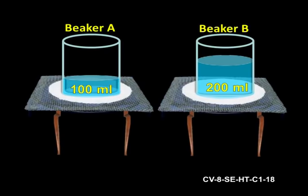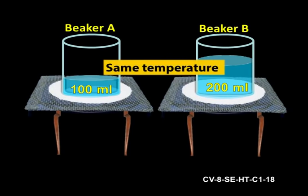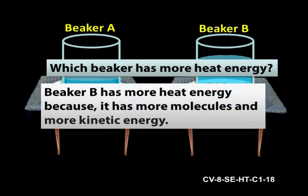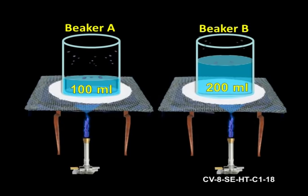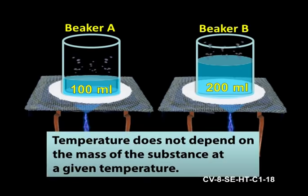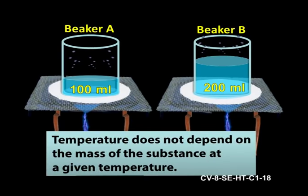Children, let us do an activity. Take 100 ml water in beaker A and 200 ml water in beaker B both at the same temperature. Which beaker has more heat energy? Beaker B has more heat energy because it has more molecules and therefore more kinetic energy. Now, let us boil the water in both the beakers. When they are boiling, measure the temperature using a thermometer. You observe that both the beakers show the same temperature. What can we say about this? Temperature does not depend on the mass of the substance at a given temperature.